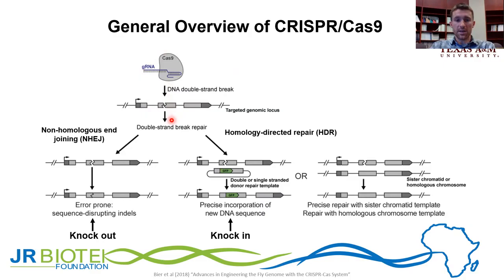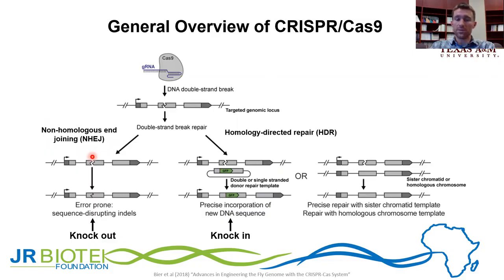This double-stranded DNA break is then repaired by one of two different innate cellular repair mechanisms. The first mechanism is non-homologous end joining. This is a very error-prone repair mechanism, which often results in the insertion or the deletion of different nucleotides within the break site. These are called indels. Indels can then cause frameshift mutations and ultimately the loss of function of the gene. When this occurs, this is called a knockout.